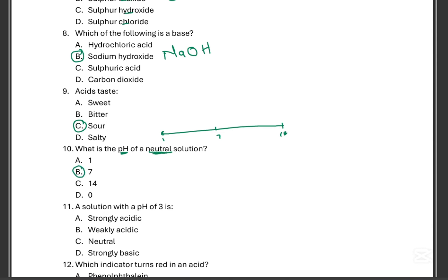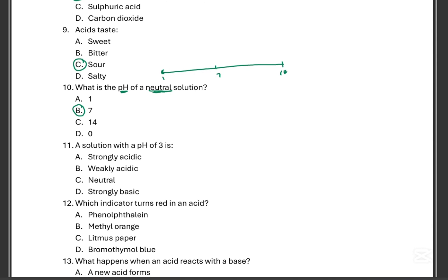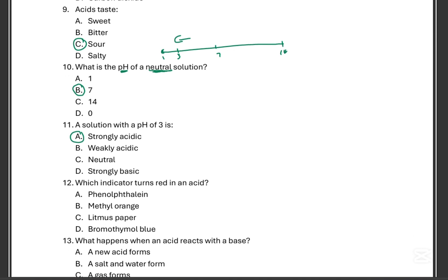Number 11, a solution with a pH of 3. So it'll be somewhere here, the pH of 3. Is it a strongly acidic one, weakly acidic, neutral, or strongly basic? It is definitely strongly acidic. Which indicator turns red in an acid? That'll be litmus paper.